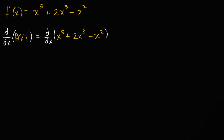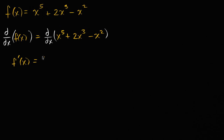So the derivative of f with respect to x — we could use the notation that that is just f prime of x — and that is going to be equal to... here we can use our derivative properties. The derivative of the sum or difference of a bunch of things is equal to the sum or the difference of the derivative of each of them. So this is equal to the derivative with respect to x of each of these three things.